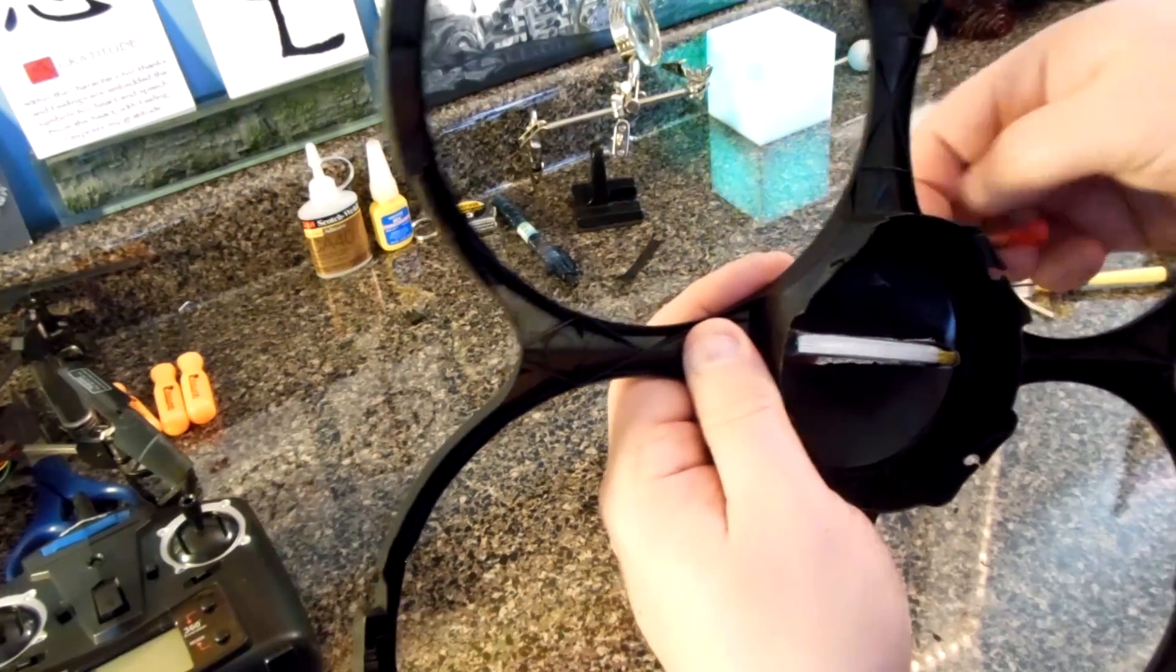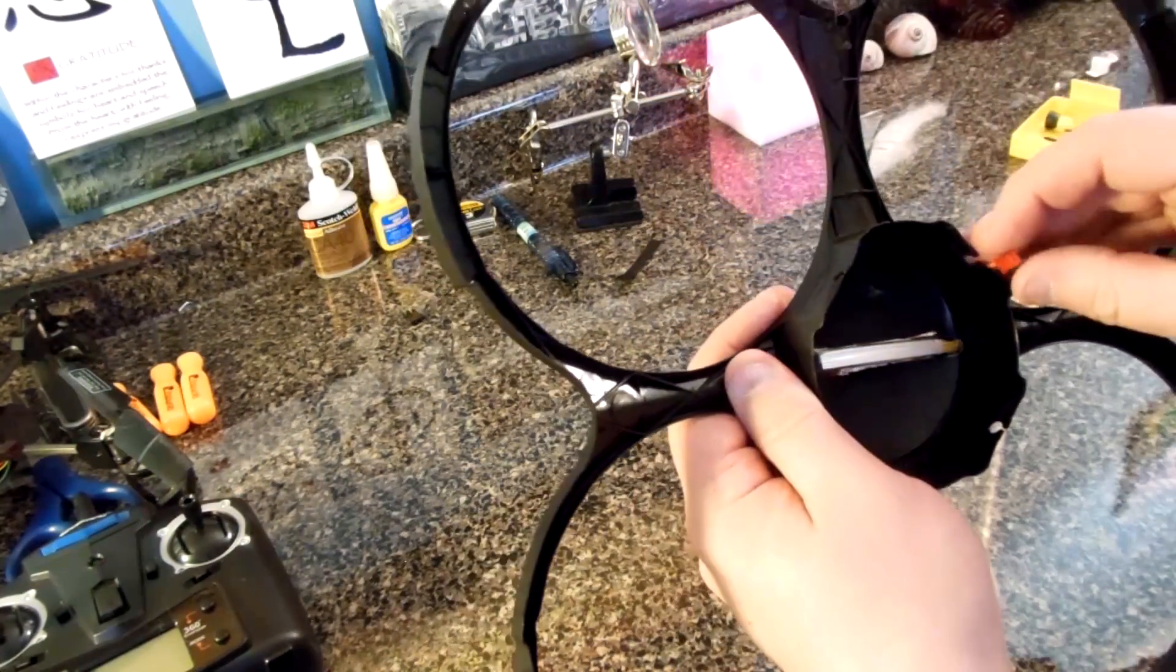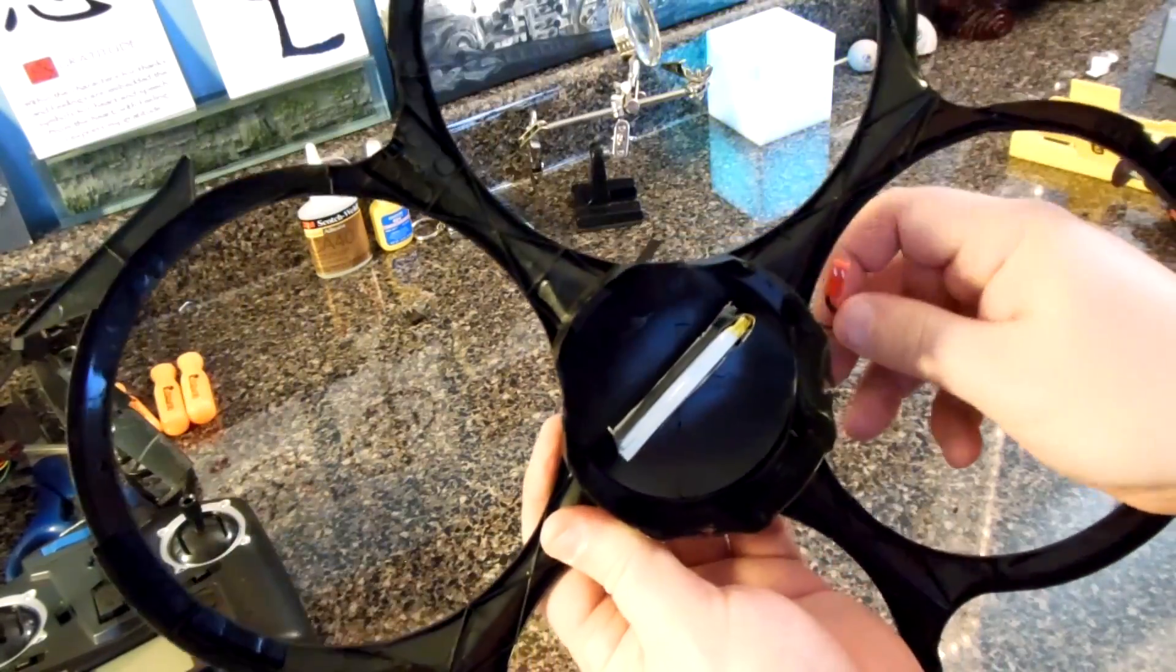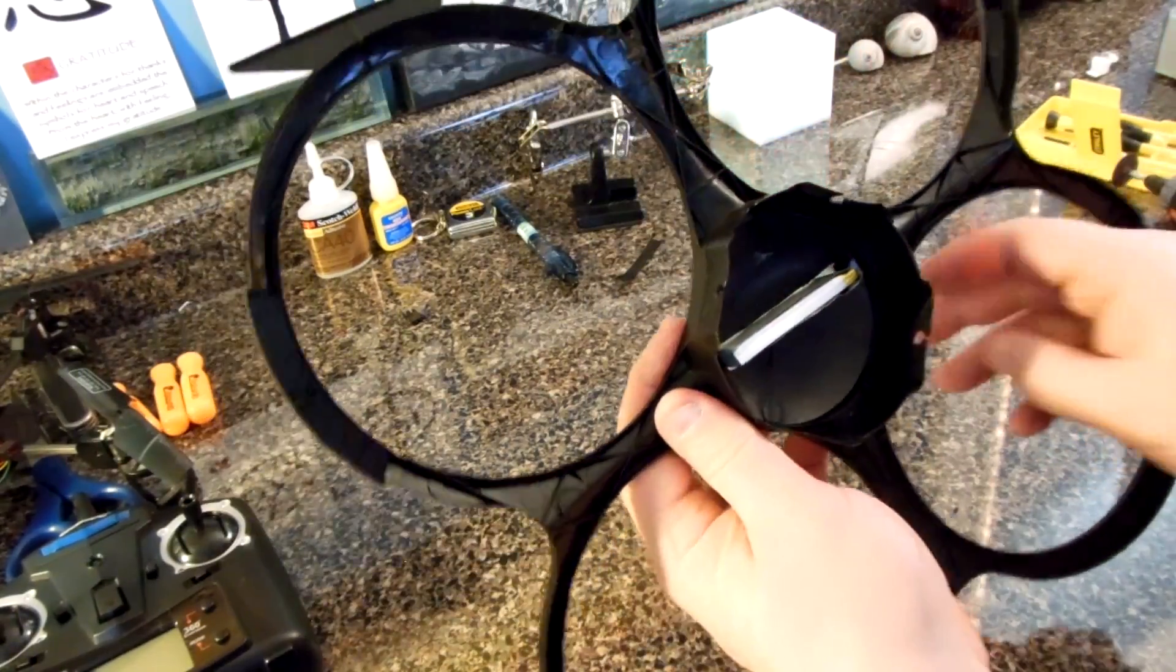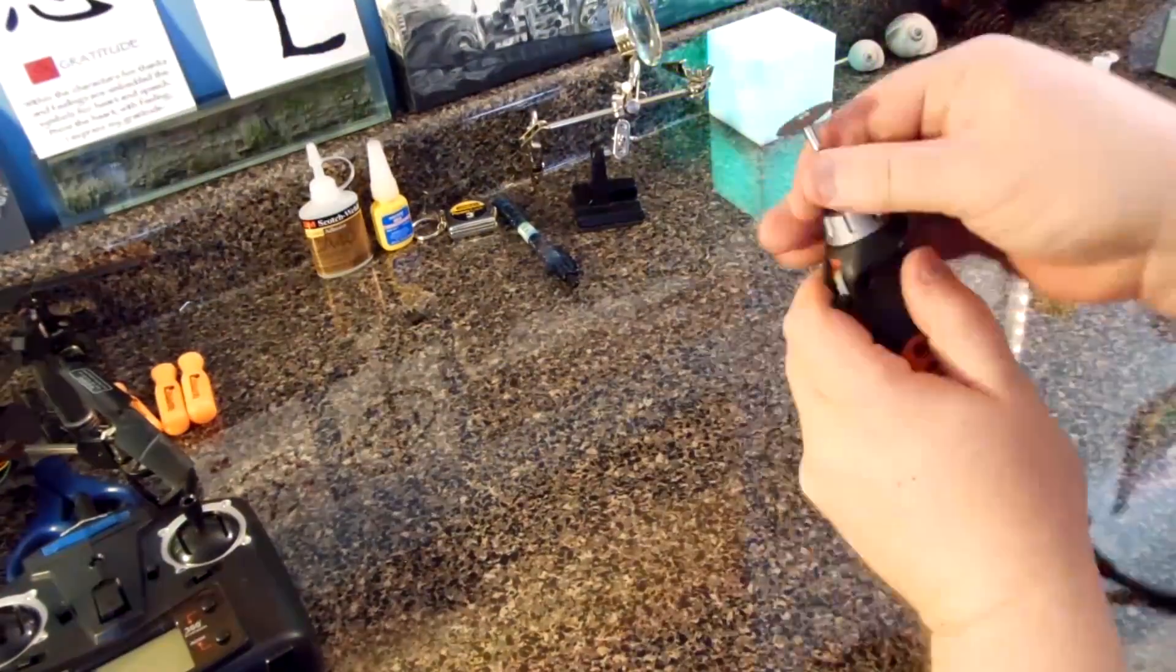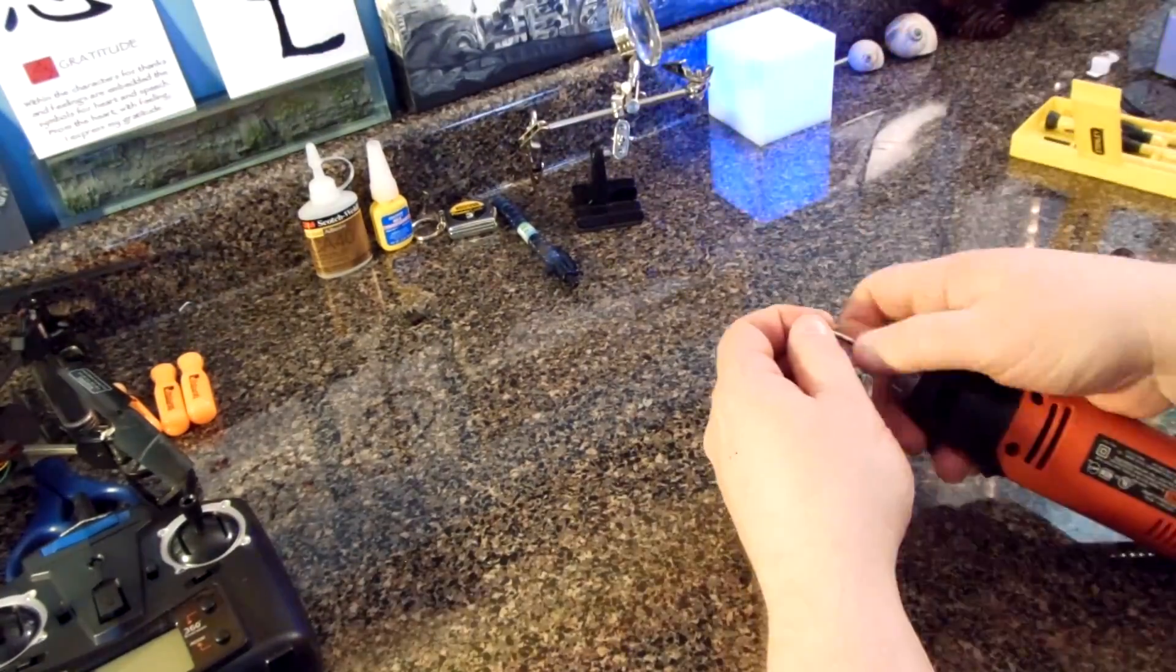You want to drill a hole in the prop guard so that the battery can plug into the connector underneath without interfering with the props. Again, I'm going to use a roto tool for this, but the tip of a utility knife will work well too.